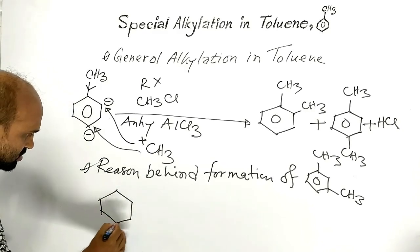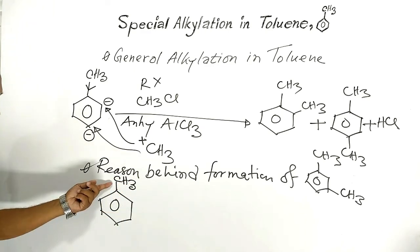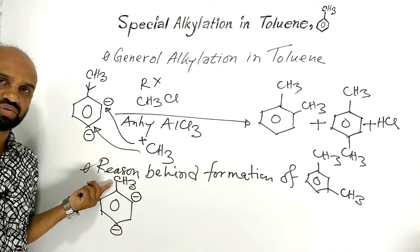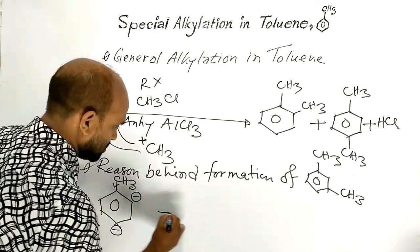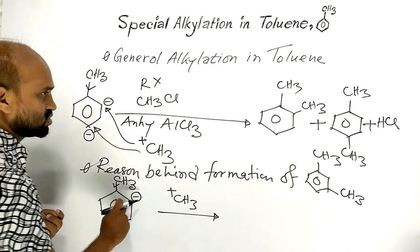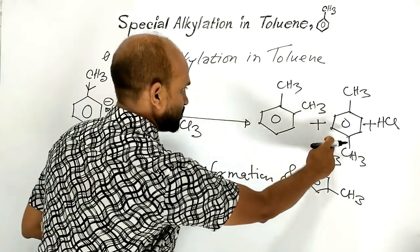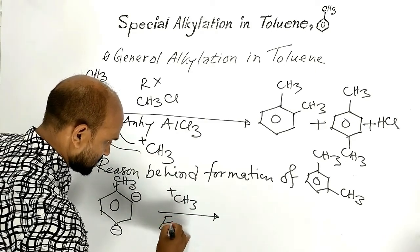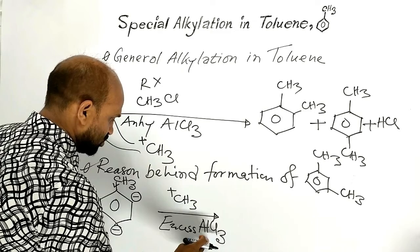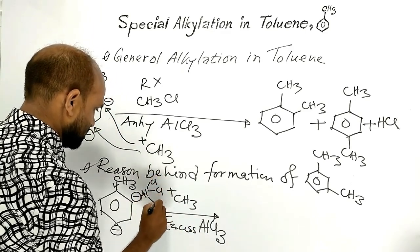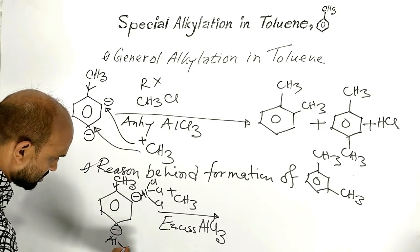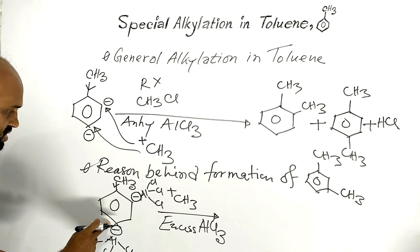This is toluene. The methyl group increases electron density at the ortho and para positions through hyperconjugation. So the methyl carbocation is supposed to attack the ortho position to form ortho-xylene and the para position to form para-xylene. But when excess anhydrous aluminum chloride is used, the additional aluminum chloride blocks the ortho position and also blocks the para position.